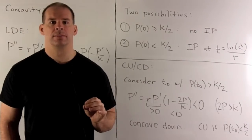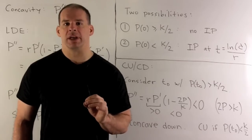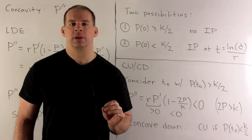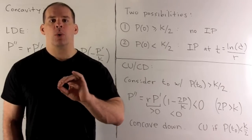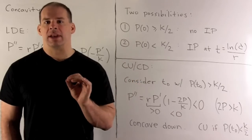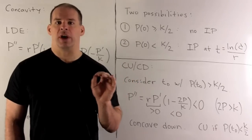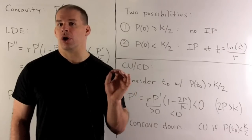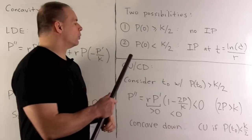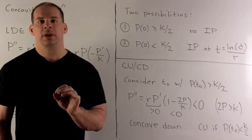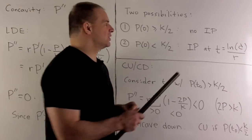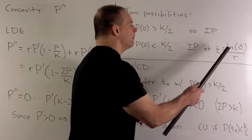That leaves us with two possibilities. In the first case, the initial population P0 is greater than or equal to K over 2. Since our function is increasing, there's no way to return to K over 2 at a later date, so there are no inflection points for t greater than zero. In the second case, P0 is less than K over 2, and we'll have an inflection point when t equals the natural log of C divided by R.